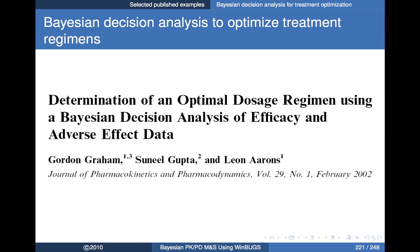Let's look at this from a Bayesian point of view using Bayesian decision analysis to optimize the treatment regimen. The example is work by Gordon Graham, Sunil Gupta, and Leon Ahrens: 'Determination of an Optimal Dose Regimen Using Bayesian Decision Analysis of Efficacy and Adverse Effect Data.' It's a somewhat simplistic example in that they're only going to look at one efficacy outcome and one adverse effect outcome. The basic principle still applies even when incorporating other measures of efficacy, adverse effects, and other drug attributes.